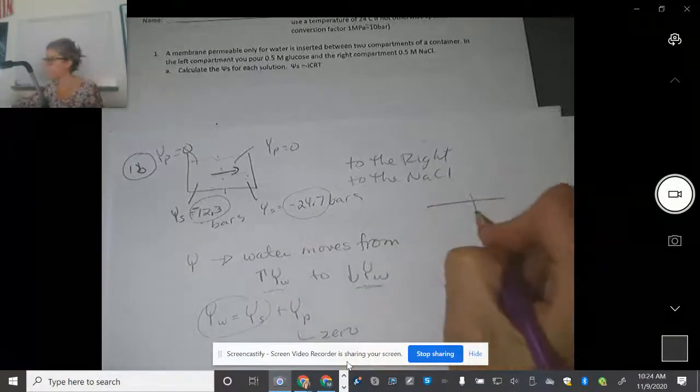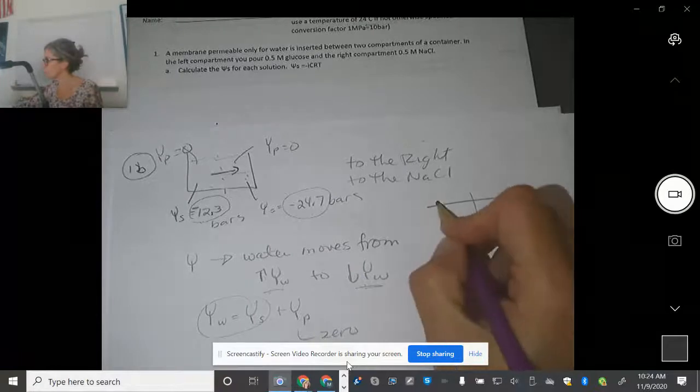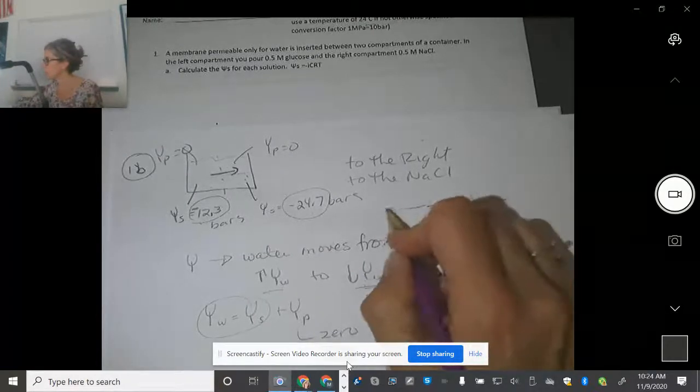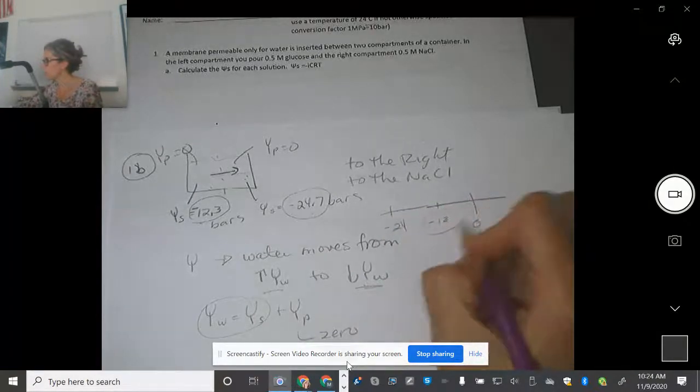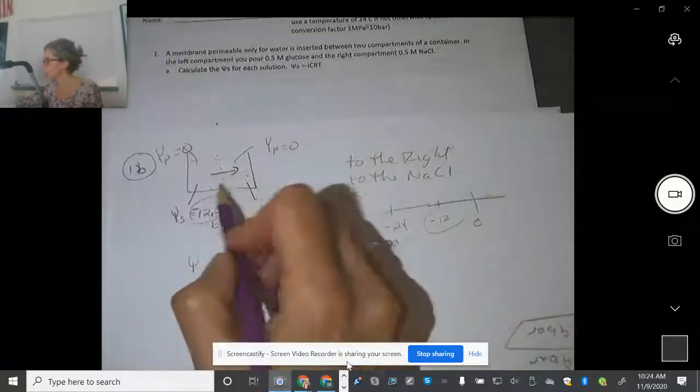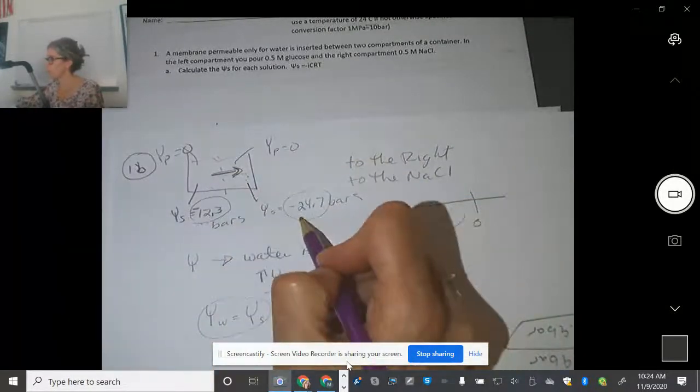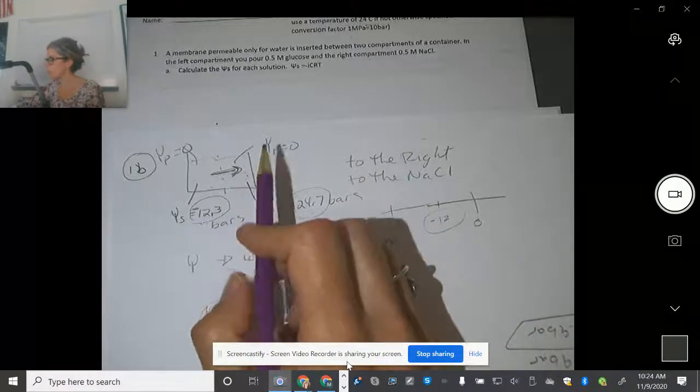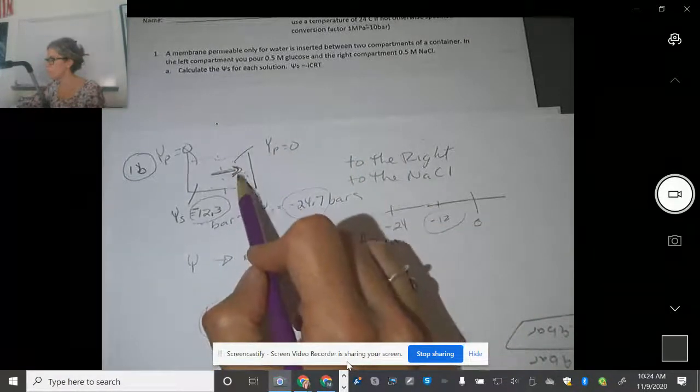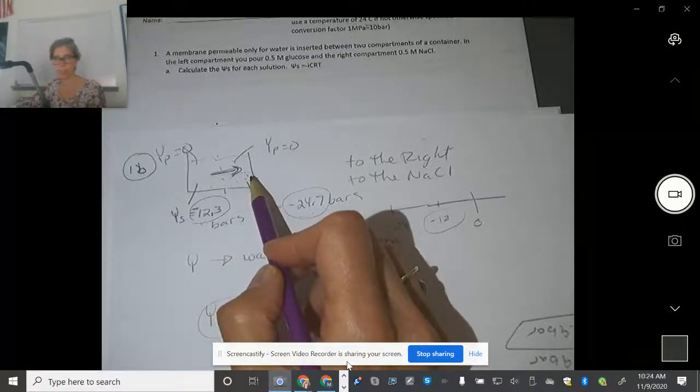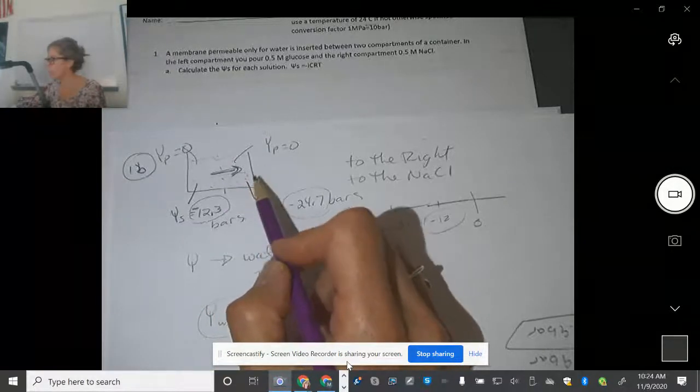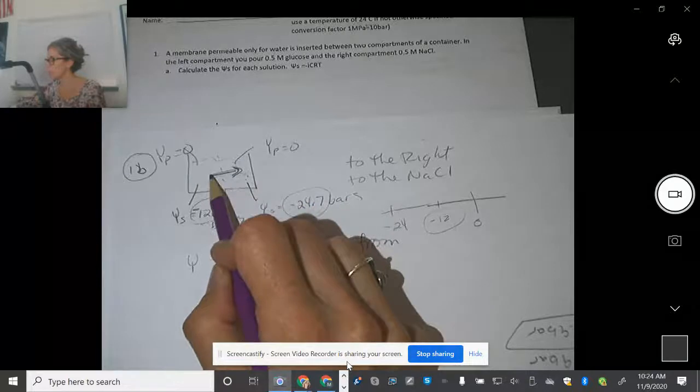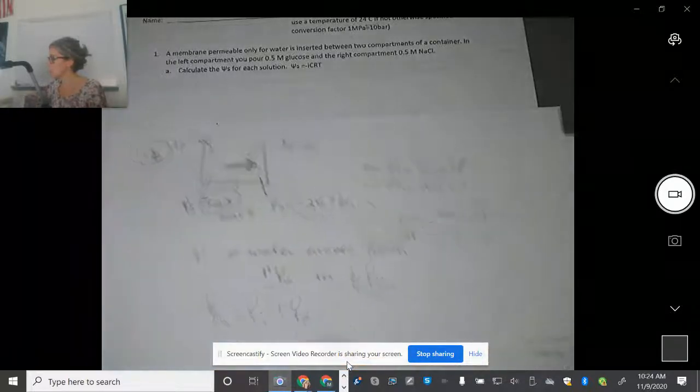So if you ever get confused with it, make yourself a number line, right? Negative 12, negative 24. The higher numbers are more to the right. So it's going to go from negative 12 to negative 24. And that kind of makes sense because the salt, even though they have the same molarity, the salt separated into two ions. So you actually have more dissolved stuff here. Water goes toward a solute.